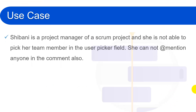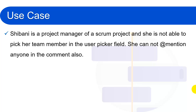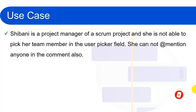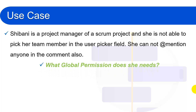Here is a use case: Sibani is a project manager of a Scrum project and she is not able to pick her team members in the user picker field. She also cannot mention anyone in the comments. We need to figure out what global permission she needs. The answer is Browse Users and Groups — if someone does not have this permission, they cannot mention anyone or pick users.